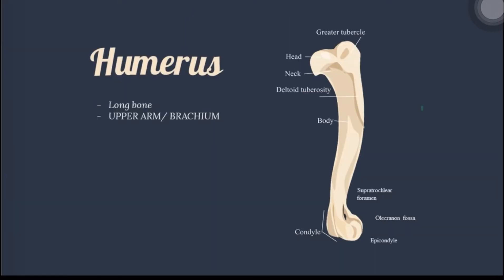Next is the humerus. The head is a rounded process articulating with the scapula's glenoid cavity to form the shoulder joint. The greater tubercle is a large process cranial-lateral to the head where muscles can attach — this is the point of the shoulder. It is divided into cranial and caudal parts in dog, pig, horse, and ruminants, but is undivided in cats.